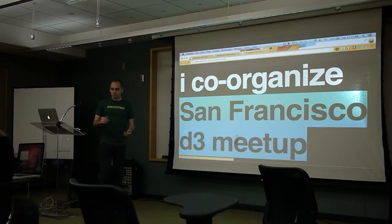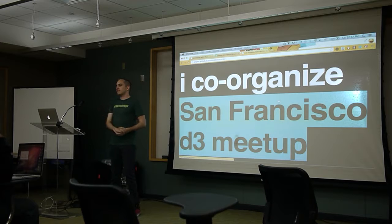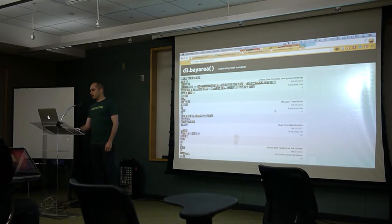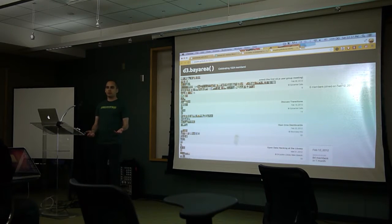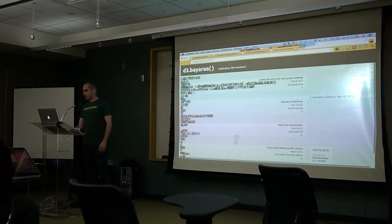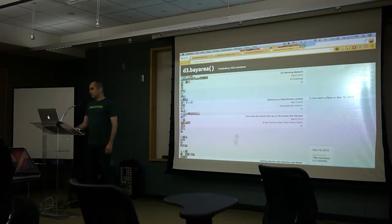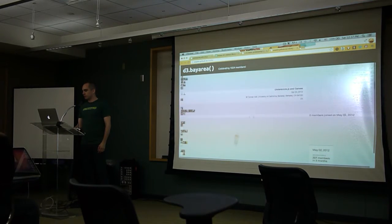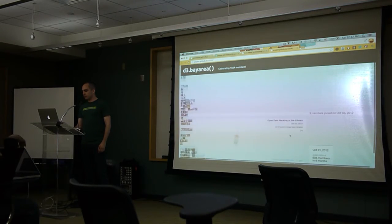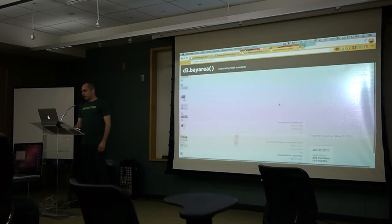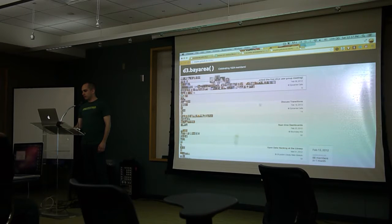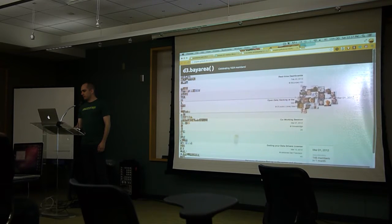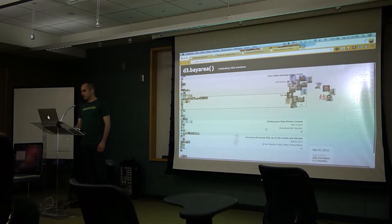I also co-organize the San Francisco d3 meetup with Kai here. We've been doing that for about a year, a little over a year, and it's grown quite a bit. A couple weeks ago we celebrated having 1024 members, which is a nice number. I made this visualization using d3 to show our members — each one of these pictures is a member joining on a certain date. You see some events we have. People always join around events, which makes sense. If you want to see the RSVP information, I made these force layouts with all the members that RSVPed — you can see that a few people go to all the things.